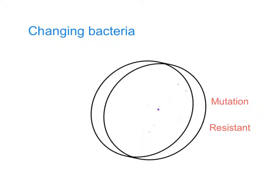We've now got a real problem, because this bacterium is resistant to antibiotic A — the first one we used — and antibiotic B. This could go on forever. The danger is we only have so many antibiotics. And the more we use, the more we select against the bacteria, the more we kill them, the more resistant they become. If we keep using lots of different antibiotics, the bacteria become more and more resistant. In the end, it's quite possible that you have a bacterium that is super resistant to nearly all antibiotics.